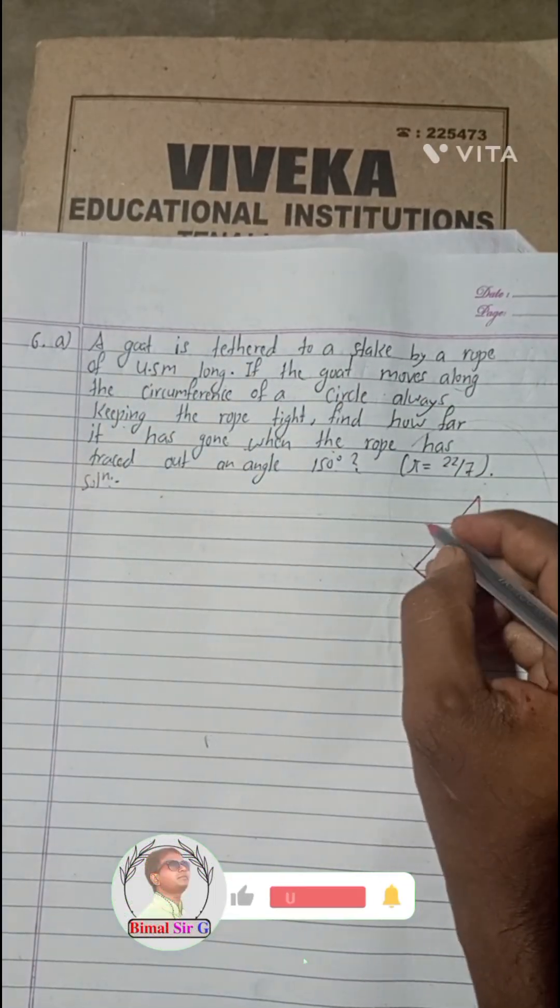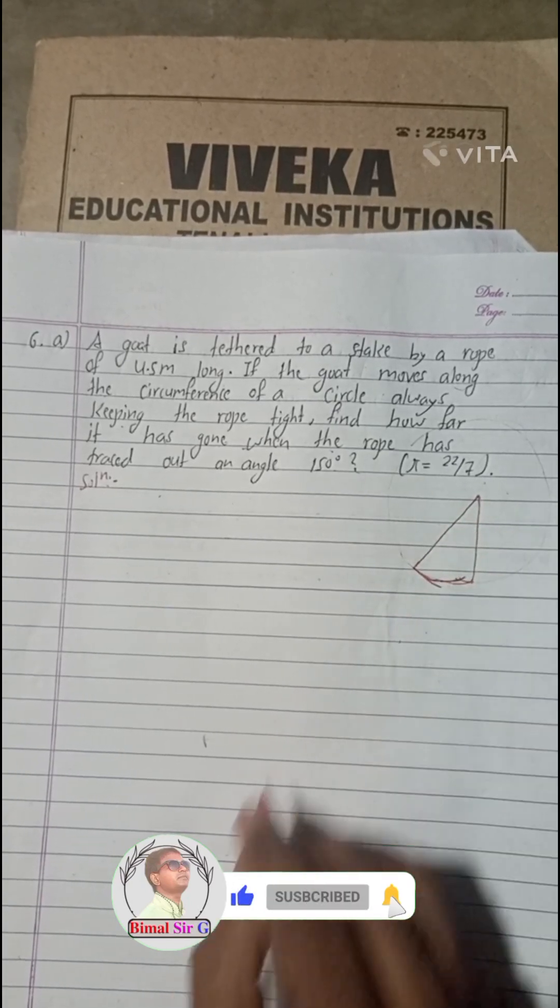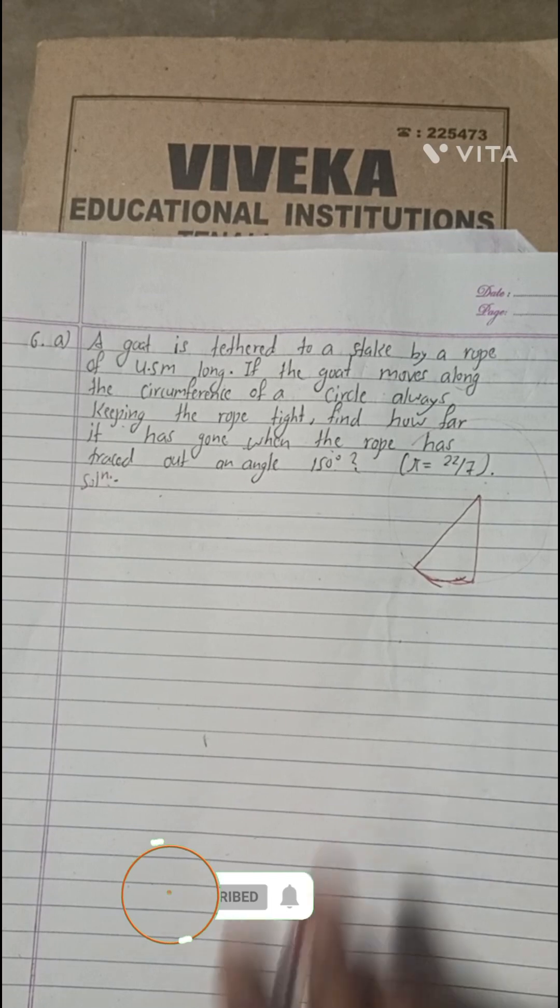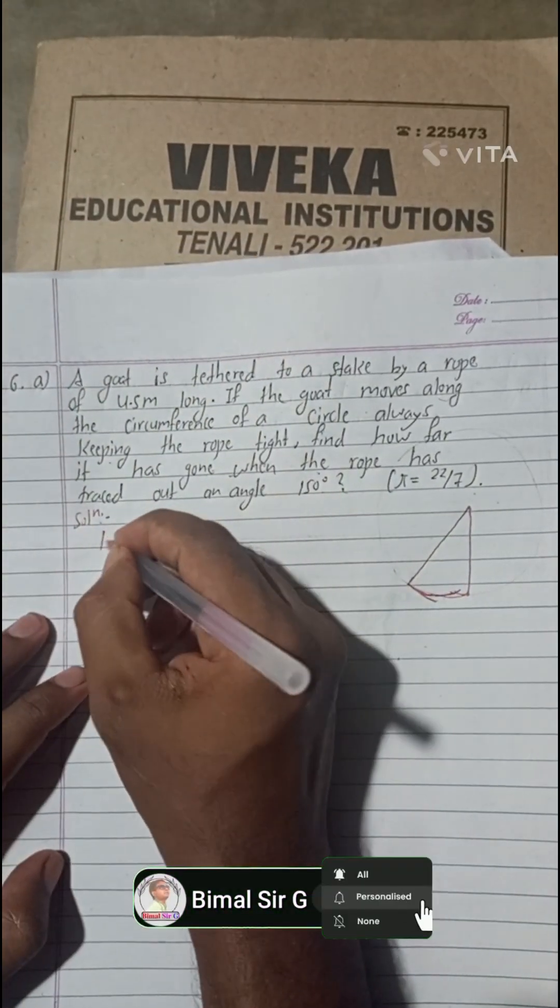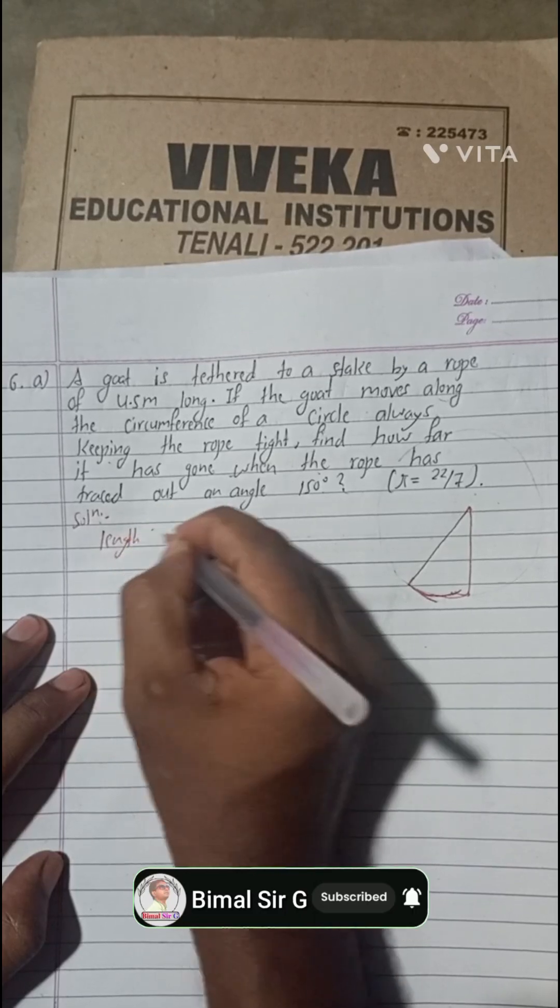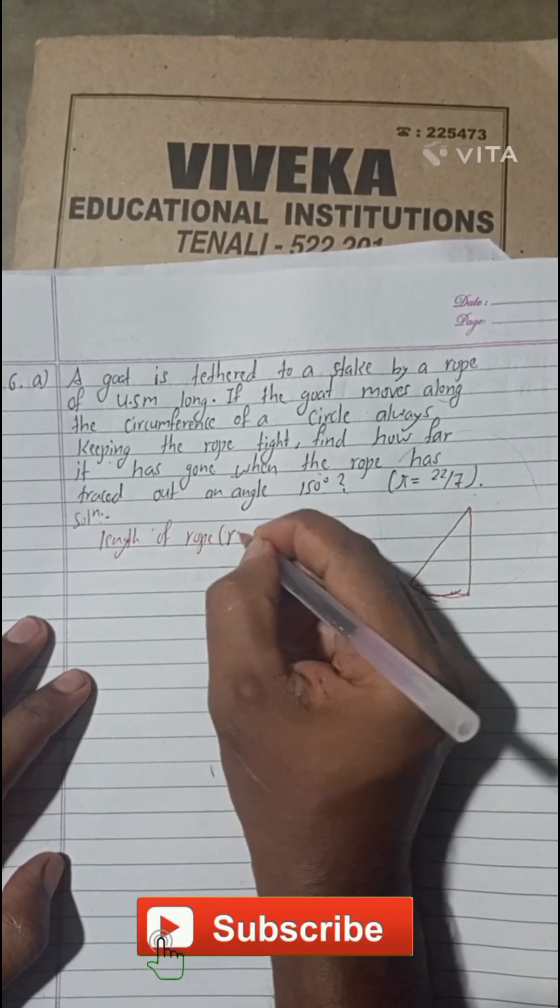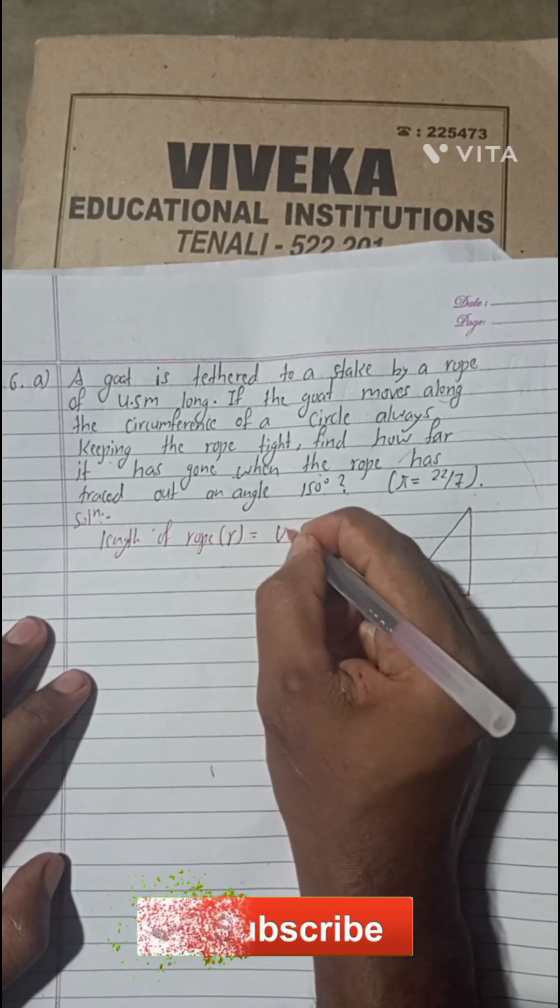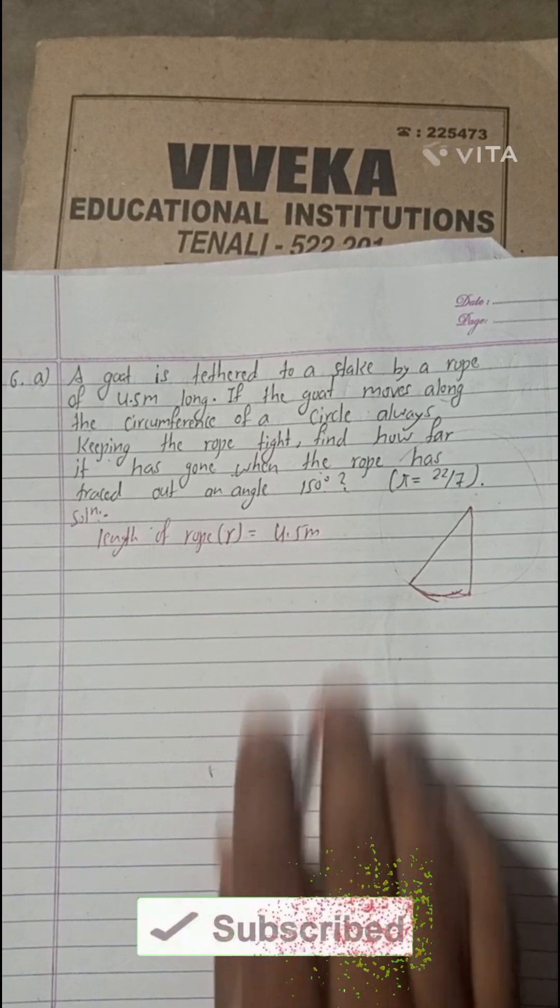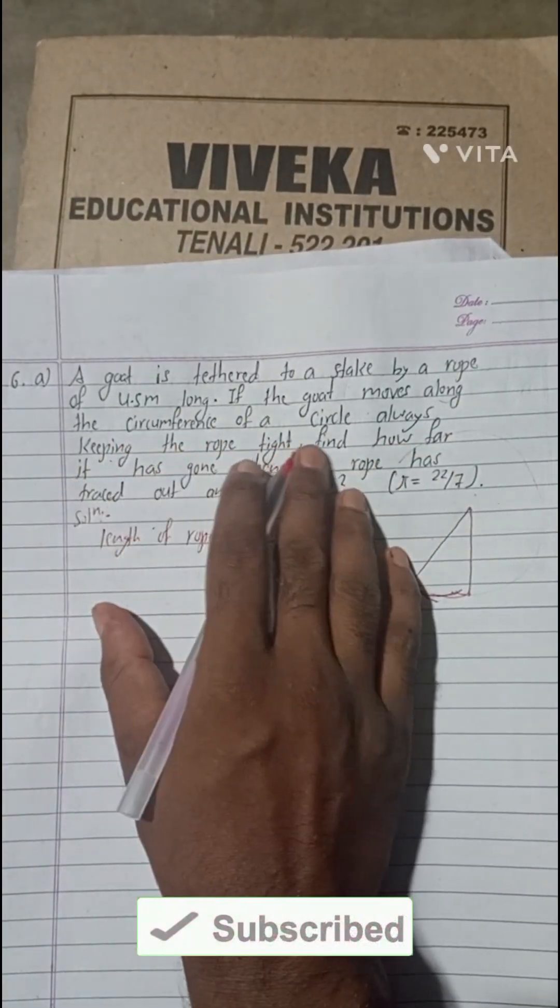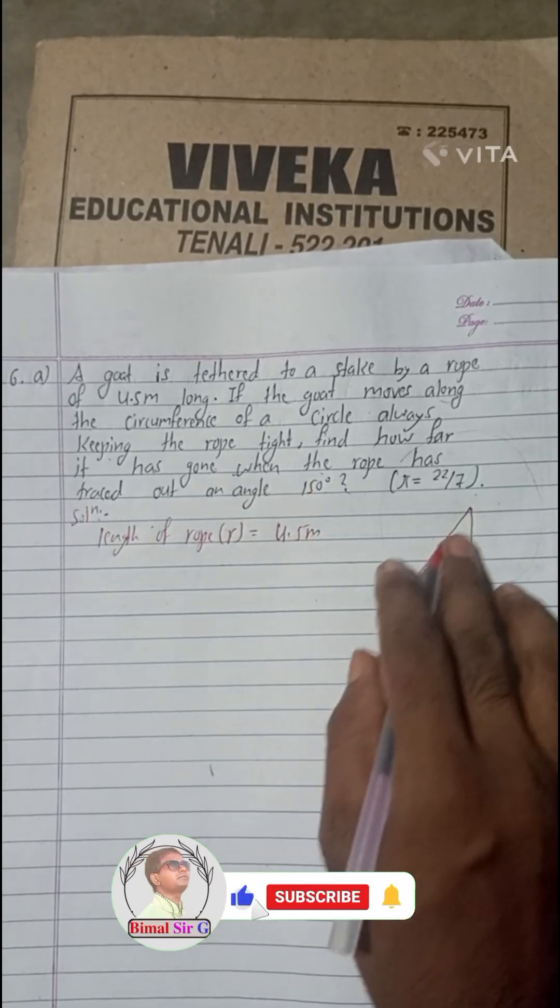So we can now write here: a goat is tethered to a stake by a rope of 4.5 meters. This is 4.5 meters. Therefore, the length of the rope, radius R, is equal to 4.5 meters.